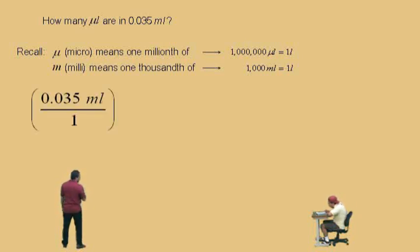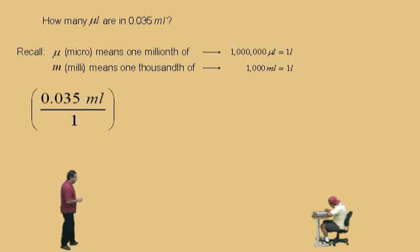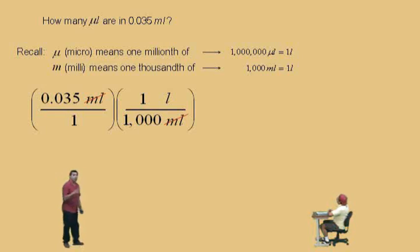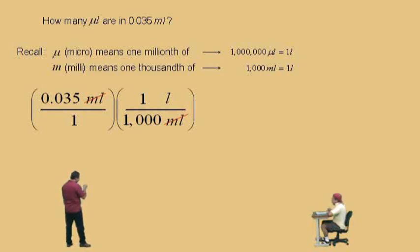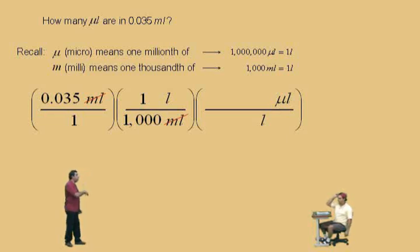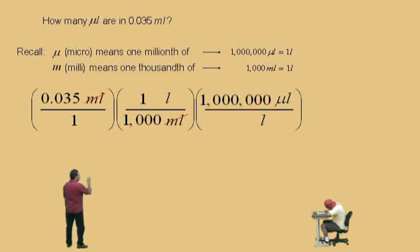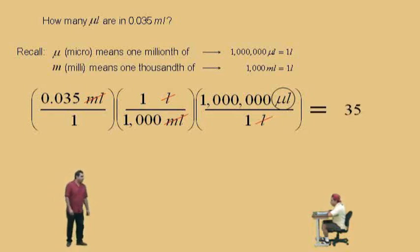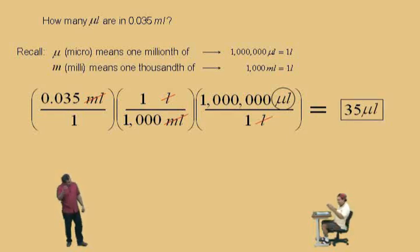Here we go — we first write out a ratio: 0.035 milliliters over one. We're going to convert those milliliters to liters. One liter is equivalent to a thousand milliliters, so we put the milliliters on the bottom so they cancel, and our dimensions left are liters. This is a volume problem. Now we're going to convert the liters to microliters. We put liters on the bottom, microliters on top, using the fact that there are one million microliters in one liter. Liters cancel out, leaving the correct dimensions — microliters. The answer is 35 microliters. Don't forget to circle your answer.